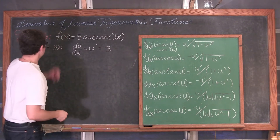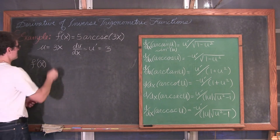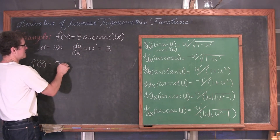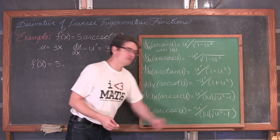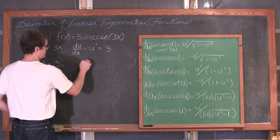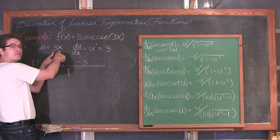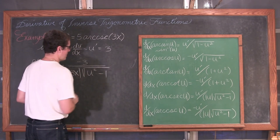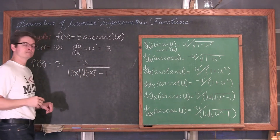So f prime of x is equal to 5 — from that constant floating down out front — times the derivative of arc cosecant of u, which is negative u-prime over the absolute value of u times the square root of u-squared minus 1. U-prime is 3, so we have negative 3, over the absolute value of 3x times the square root of 3x squared.